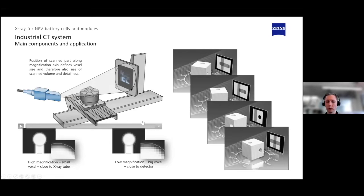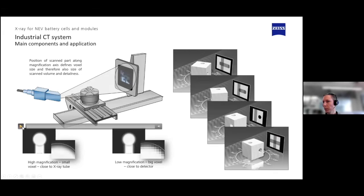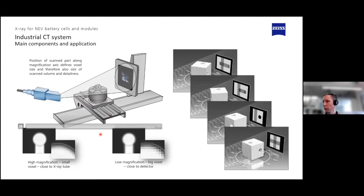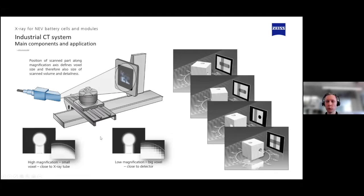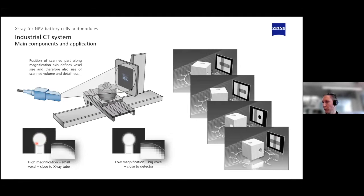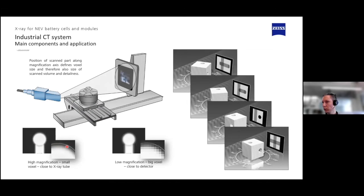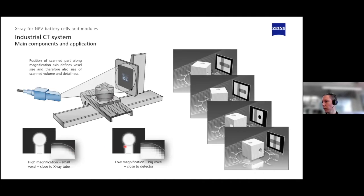A big difference between systems is what kind of magnification we achieve. If the part is moved closer to the detector, we'll have a more coarse, bigger voxel size. The voxel size is the volumetric pixel — it tells us how much detail we can see. If you scan a sphere with high magnification, you get small voxels and fine details, a very good surface representation of the part. With lower magnification, you have a bigger voxel size and less detail.